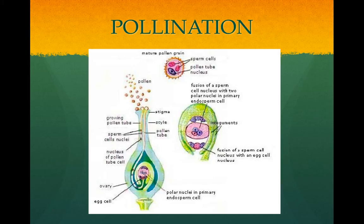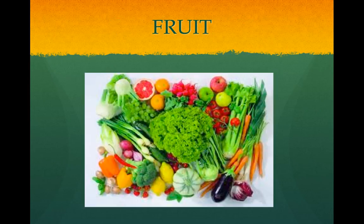The ovule's coat becomes the seed coat. At this point, the seed becomes dormant — growth and development are suppressed or suspended. Dormancy is an important evolutionary adaptation, allowing the seed to be dispersed. The fruit is the mature ovary that protects and nourishes the seeds. It also aids in dispersal. After pollination, the flower loses its petals. Hormones cause the ovary to grow, and the walls of the ovary expand and thicken to create the fruit or the pod.